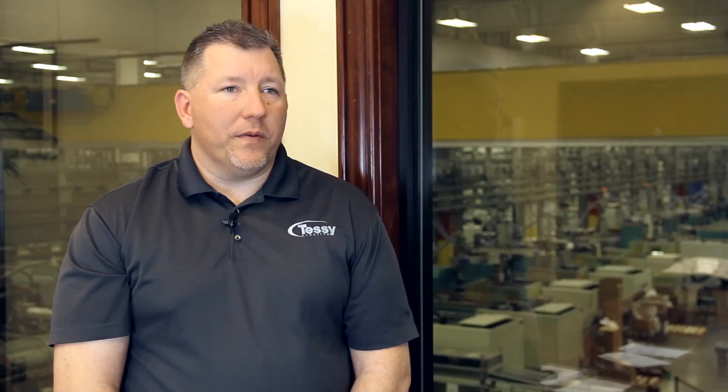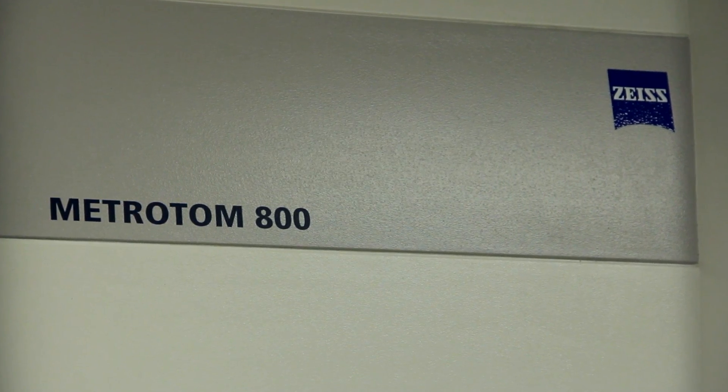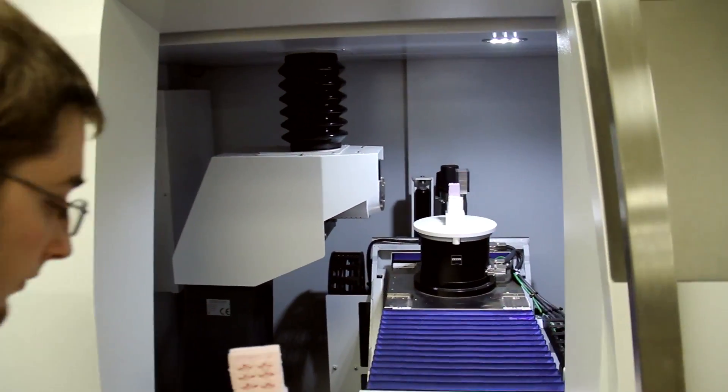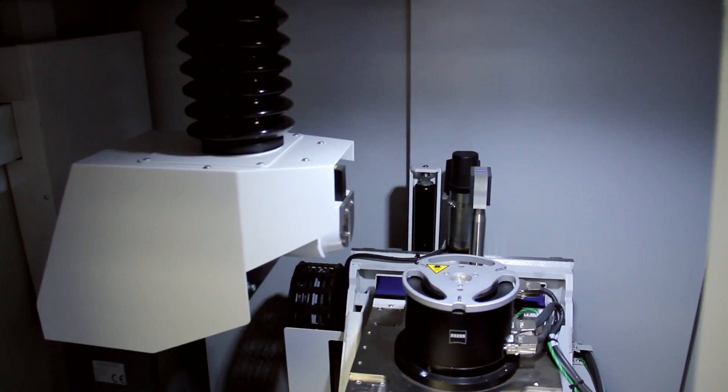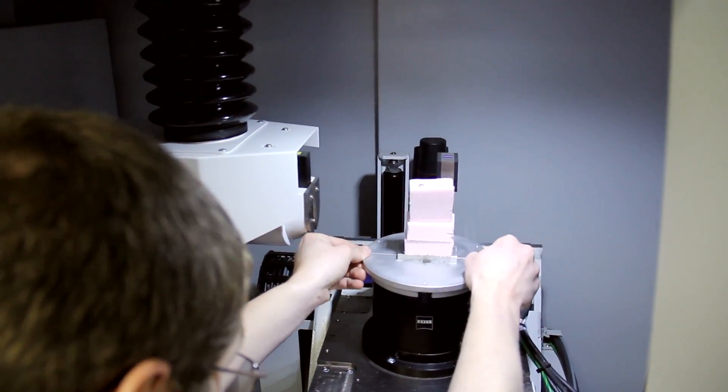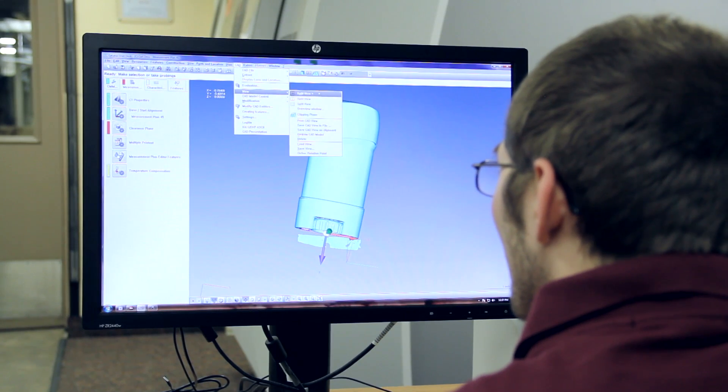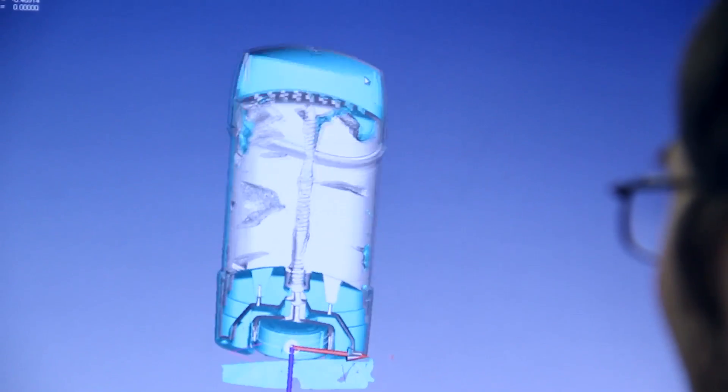We use the metrotom primarily for doing first article inspections on very complex small geometries for the medical device industry. We also use it for scanning assemblies and dissecting assemblies, so you take a scan of an entire canister or a cap enclosure and see potential leak paths, if they're leaking where it could be coming from, or potential interferences where you could be binding or increasing torque or pull.